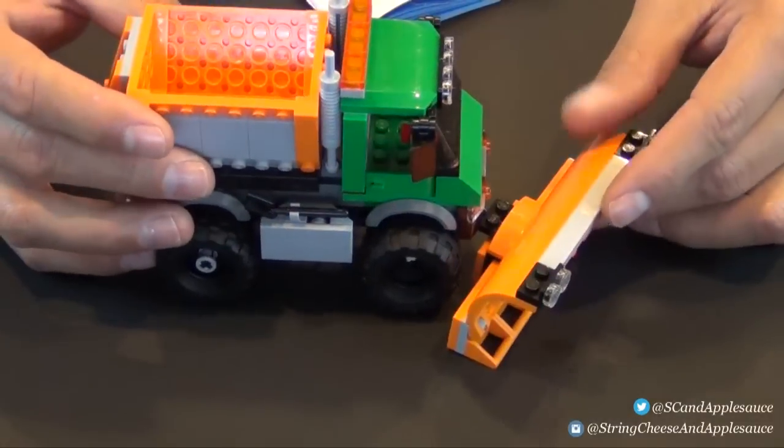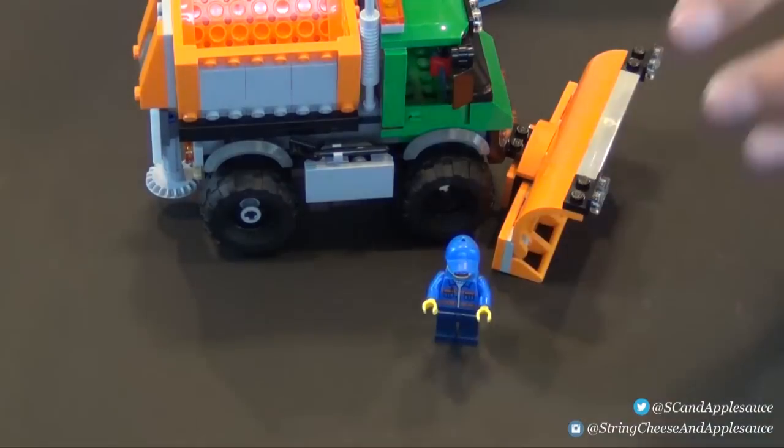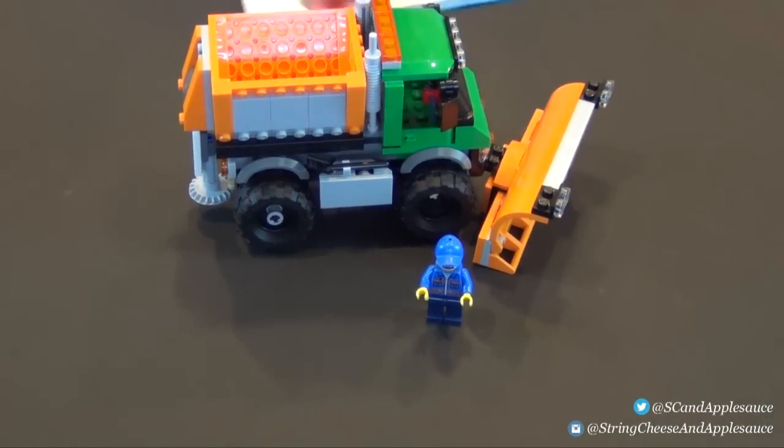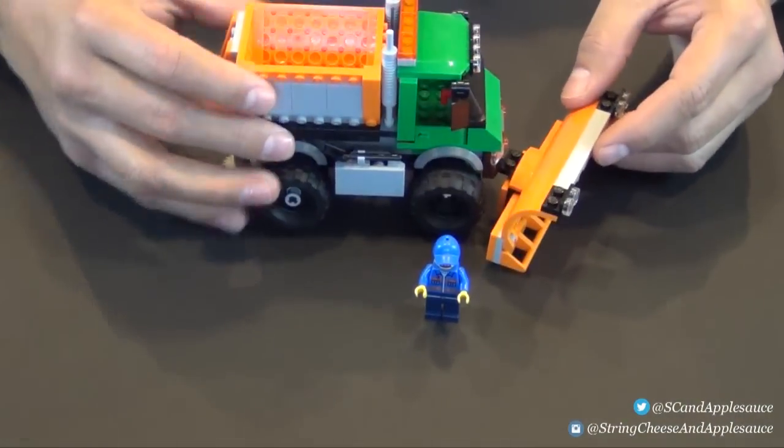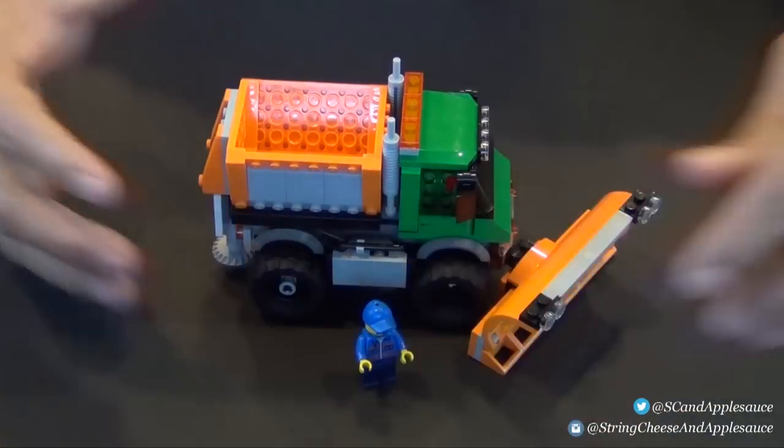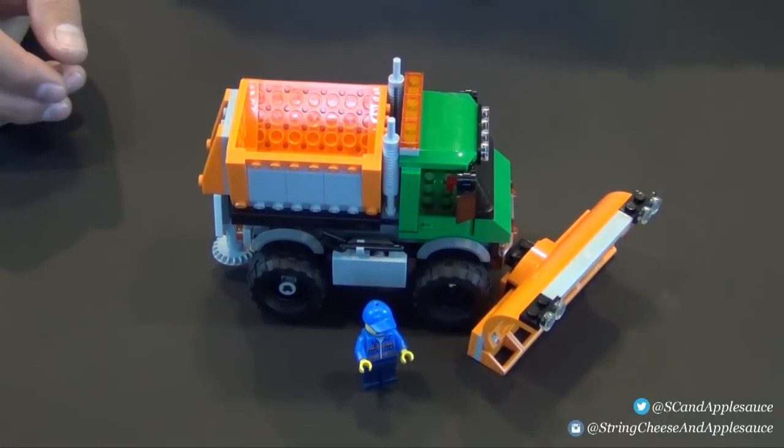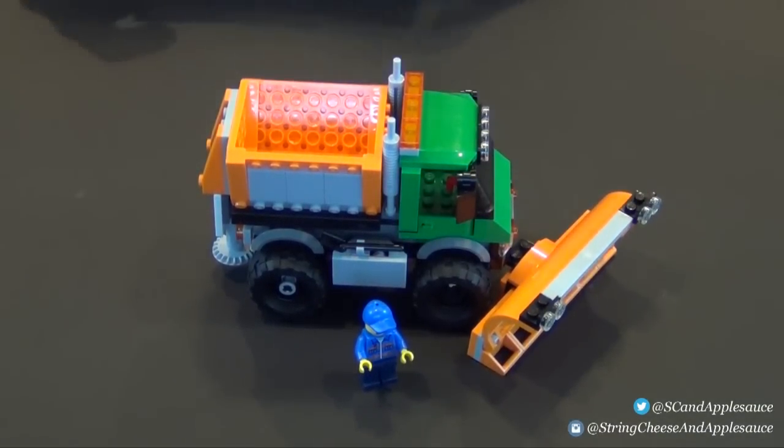So there you go, we'll do a review of this set to kind of look at everything in further detail, but that is it for the snow plow truck. We did have one extra piece, just one of these round 1x1 clear tiles. There you go.